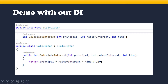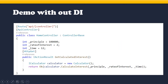Take a look at this example. Here we have one interface and one class. ICalculator is the interface and Calculator is the class. Under this, we have one method, CalculateInterestRate, which takes certain inputs, calculates interest, and returns the output as an integer. In HomeController, there is one action method, GetCalculatedInterest, which internally calls the Calculator class method by creating an object and calling CalculateInterest.